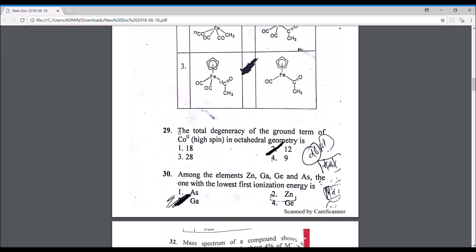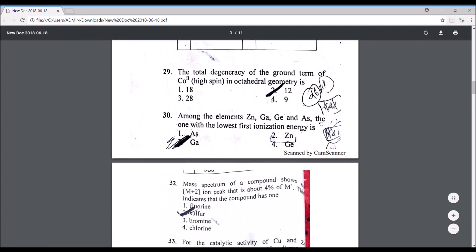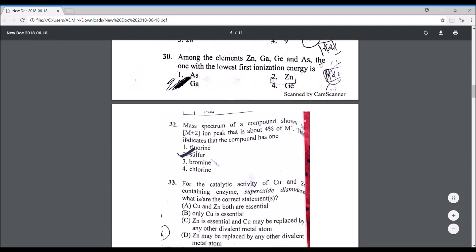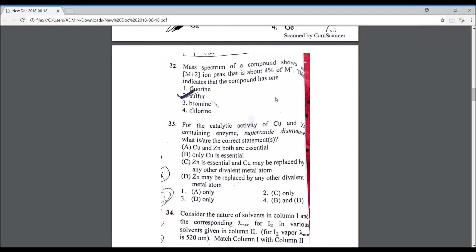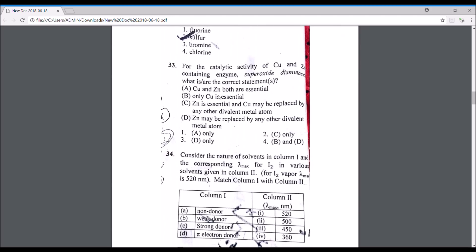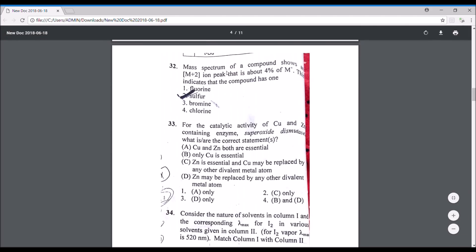The total degeneracy of the ground term of cobalt 2+ high spin in octahedral geometry, the correct answer is 12. The lowest first ionization energy is gallium. The mass spectrum for a compound shows M+ and M+2 peak, and the M+2 peak is about 4% of the M+ peak, so this is sulfur, because sulfur-32 has abundance of 96% and M+2 of sulfur has abundance of 4%. Chlorine is 3:1, bromine is 1:1, so that could not be the answer.